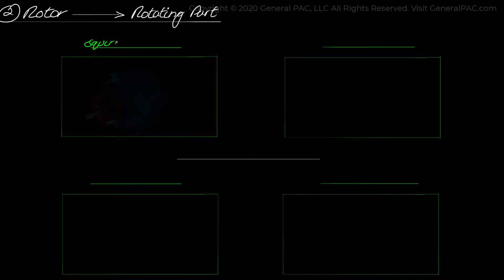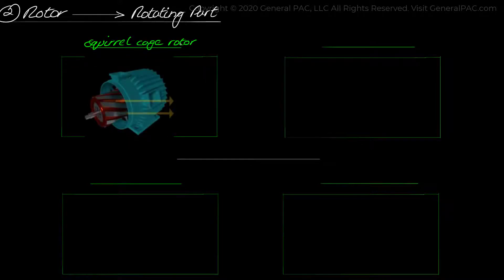The rotor is the rotating part of the machine. There are two types of rotors in an induction machine. One is the squirrel cage rotor, which consists of conductor bars that are shorted with end rings and a core in which the conductor bars are placed.